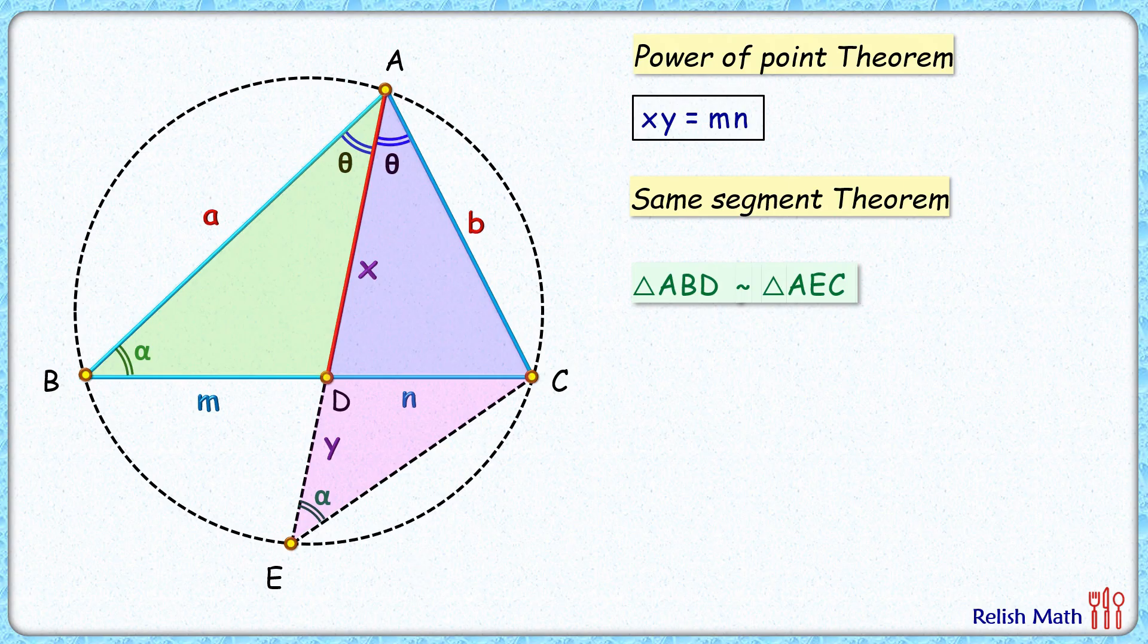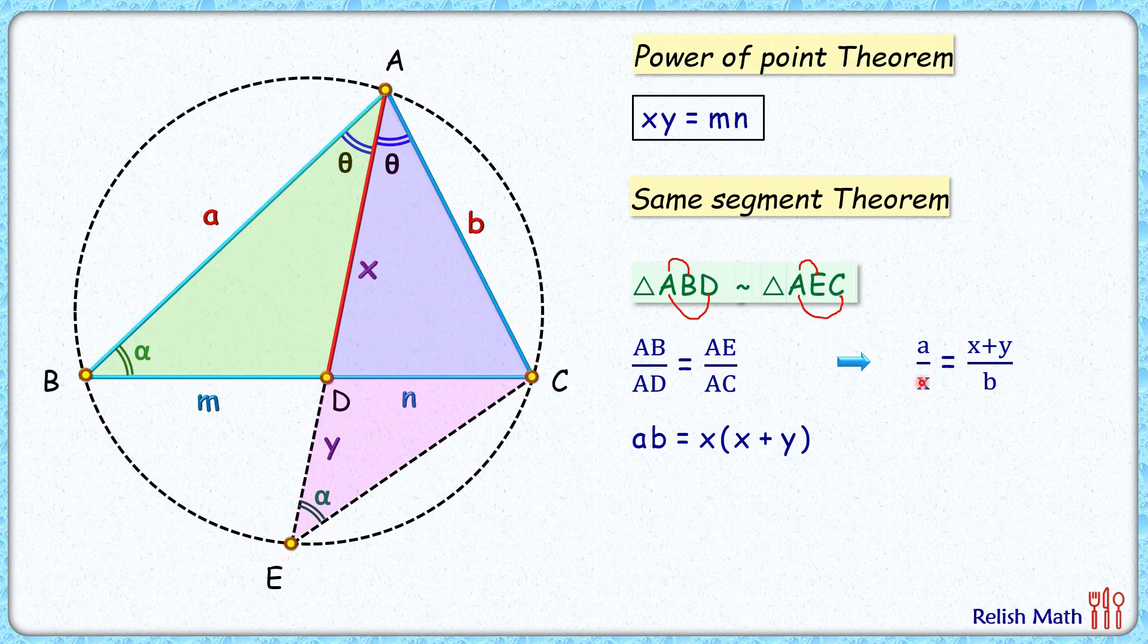So we have AB upon AD equals AE upon AC. Putting the values, we get a upon x equals x plus y upon b.